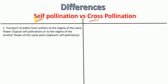Self-pollination, as the name suggests, 'self' means within the plant. So basically, what is self-pollination? In self-pollination, there is transport of pollen from anthers — that's the male reproductive part — to the stigma, which is the female reproductive part, of the same flower. That is typical self-pollination, or to the stigma of another flower of the same plant, which is adjacent self-pollination.